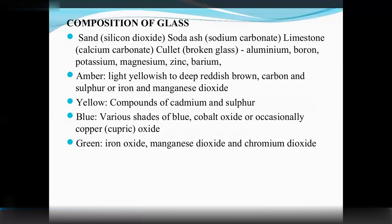Glass can be colored blue due to cobalt oxide, or occasionally copper (cupric oxide). Green color is produced by iron oxide, manganese dioxide, and chromium dioxide. This is the composition of glass.